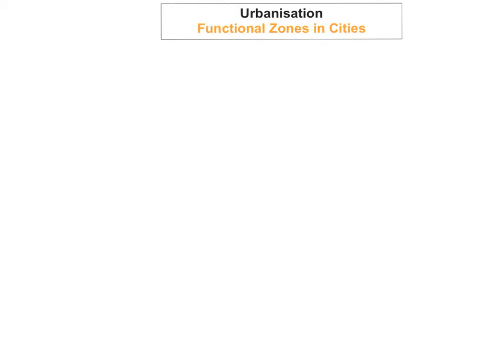An example might be that you could have residential, it could be ecclesiastical, it could be port function, it could be educational function. There can be a range of functions, and usually in cities you'll find that they'll be multifunctional. It won't just be one function — they'll have a range of functions.